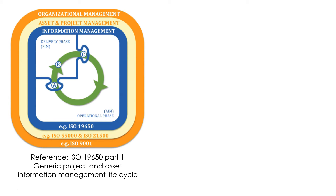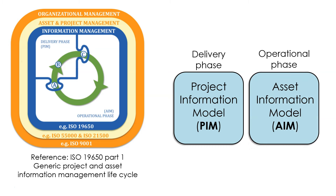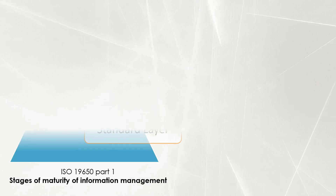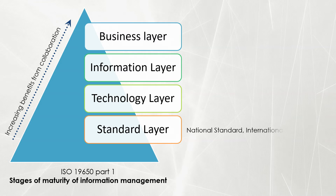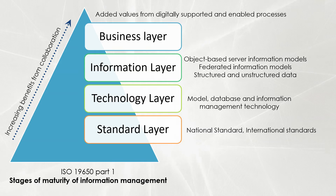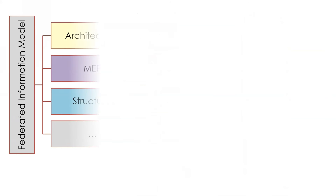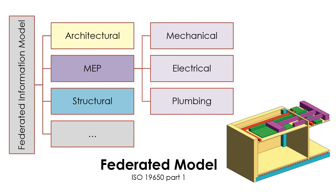In the ISO 19650 Part 1 document, there are sections about the project information model (PIM) for the delivery phase and the asset information model (AIM) for the operational phase. ISO 19650 Part 1 also categorizes stages of maturity of information management: standard layer, technology layer, information layer, and business layer. The benefits of collaboration increase as we move from the standard layer to the business layer, which fully incorporates digitally supported and enabled processes. The coordination between architectural, MEP (mechanical, electrical, plumbing), and structural building information and the creation of a federated model is another guideline presented in ISO 19650 Part 1.